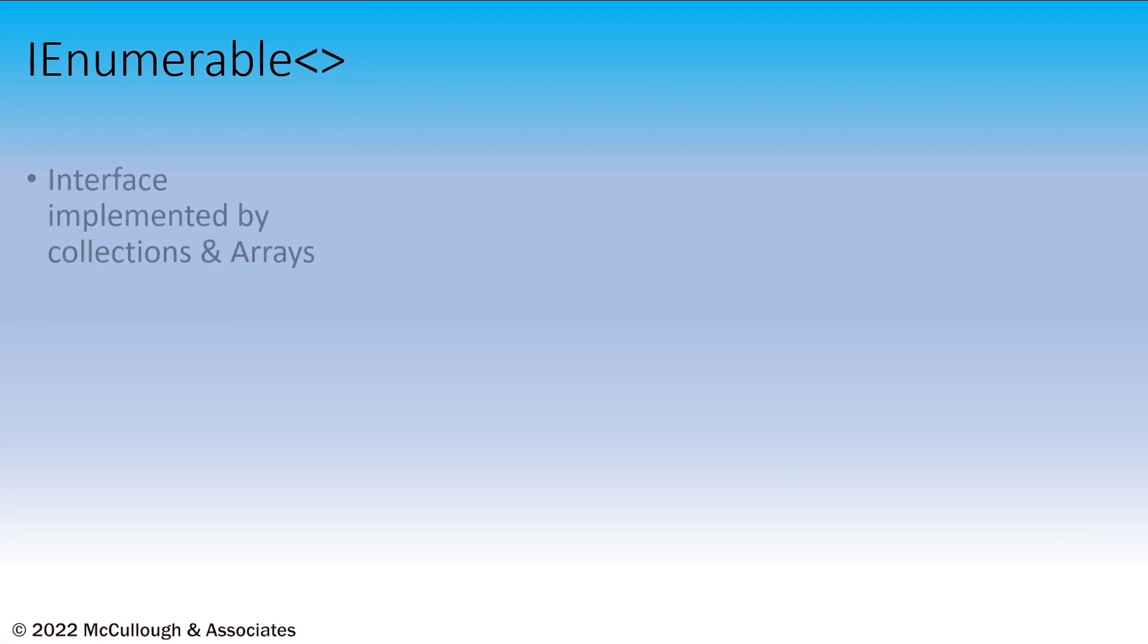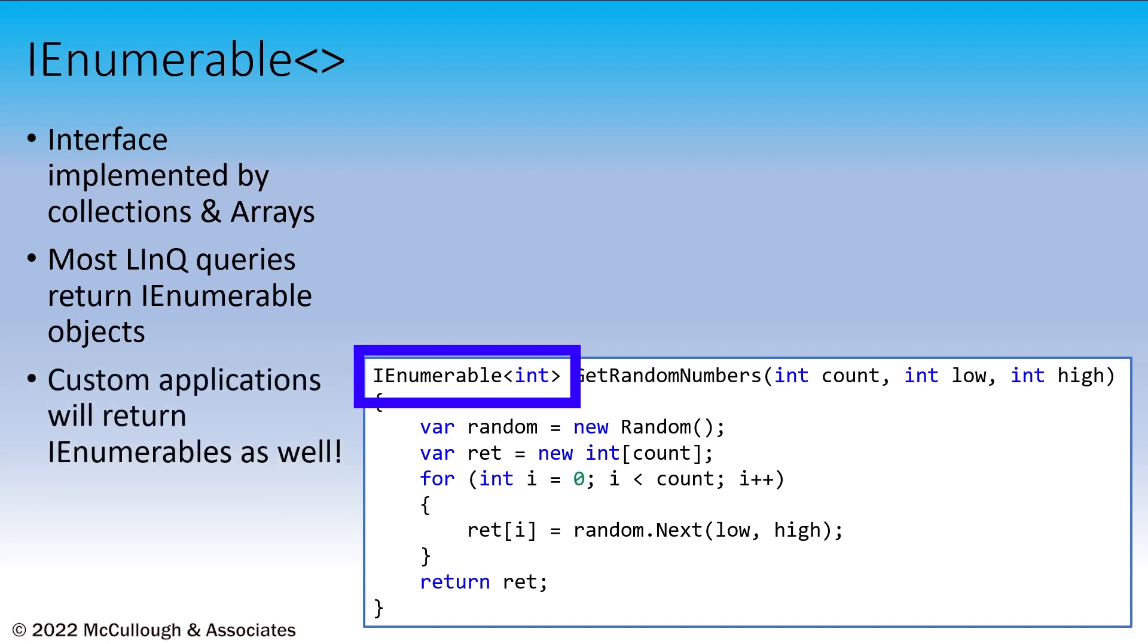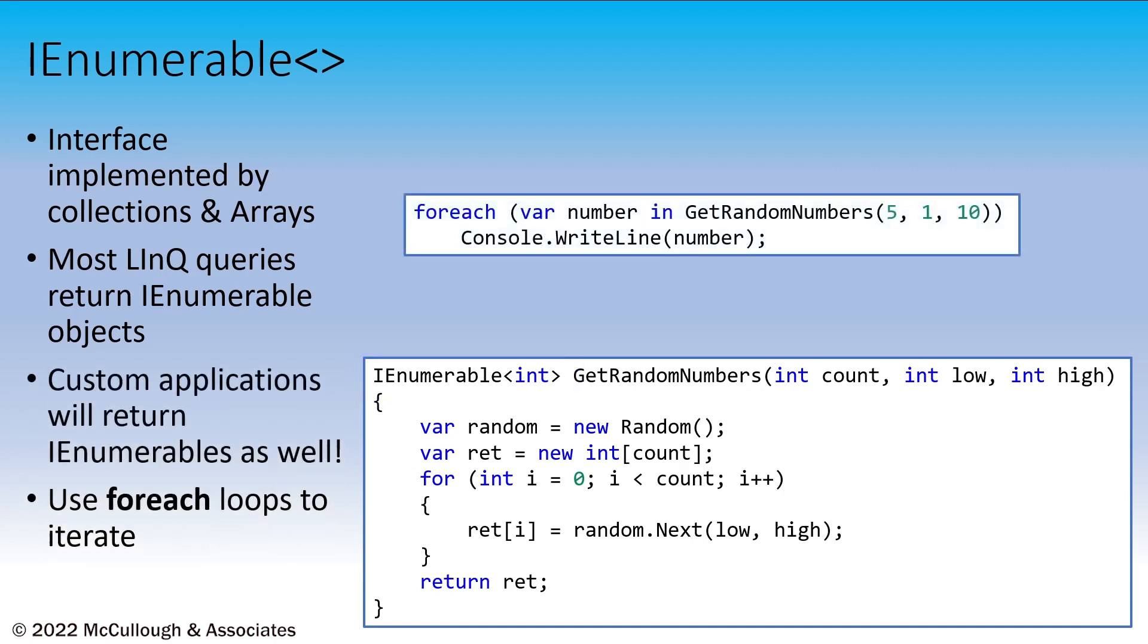Let's start with the interface IEnumerable. This interface is implemented by all collections, as well as primitive arrays. Most LINQ queries return IEnumerable types of objects. A custom application can also return IEnumerable types of objects. We use those objects to loop and process the elements that we find in the collection.